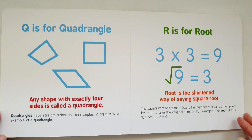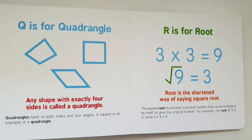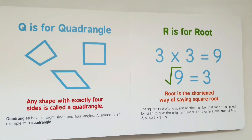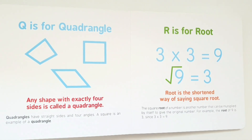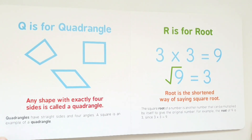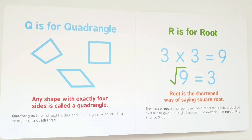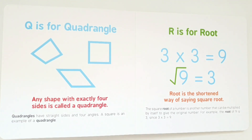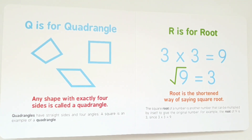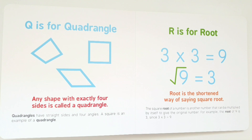Q is for quadrangle. Any shape with exactly four sides is called a quadrangle. Quadrangles have straight sides and four angles. A square is an example of a quadrangle.